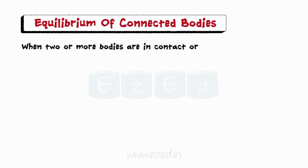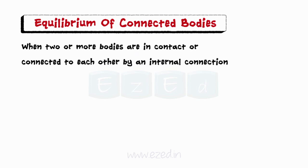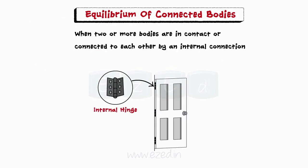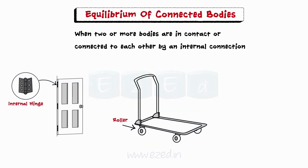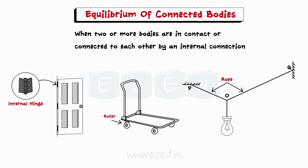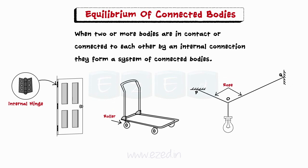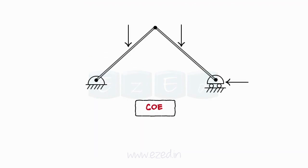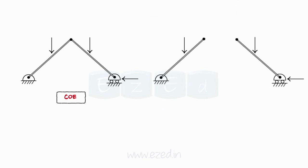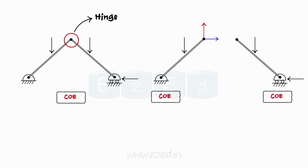When two or more bodies are in contact or connected to each other by an internal connection, like an internal hinge, roller, or a rope, they form a system of connected bodies. We can apply the conditions of equilibrium to the entire system or isolate the bodies from the internal connections and apply the COE to them also. At the internal connection, say a hinge, the direction of components of the reaction are assumed on any one of the bodies, and the opposite direction is assumed on the other body. This is done because when an internal force is exposed, it occurs in pairs.